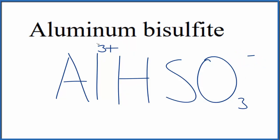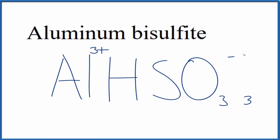We can do that by putting this 3, if we had 3 of these bisulfite ions here, let's put a 3 there. 3 times the 1 minus would balance out the 3 plus, net charge would be zero.